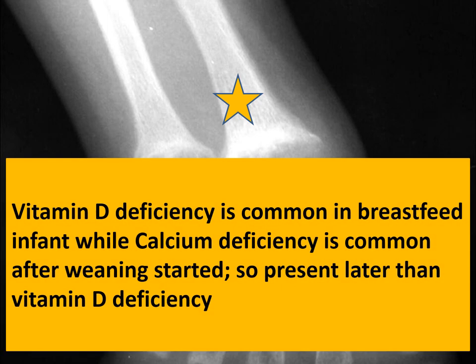Vitamin D deficiency is common in breastfed infants, while calcium deficiency is common after weaning is started, so it presents later than vitamin D deficiency. Whenever a patient is less than 6 months of age with features of rickets, we should rule out vitamin D deficiency first. If the age is more than 6 months, then it can be due to calcium, vitamin D, or sometimes phosphorus deficiency.